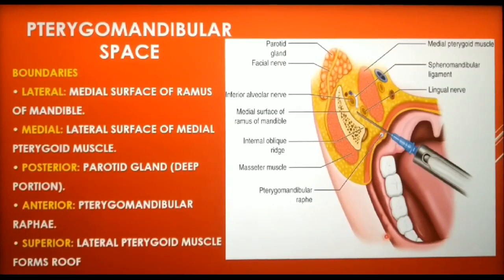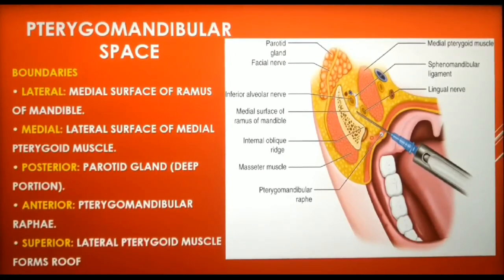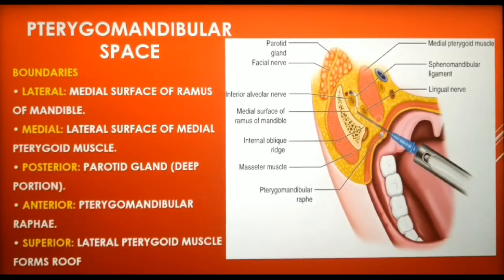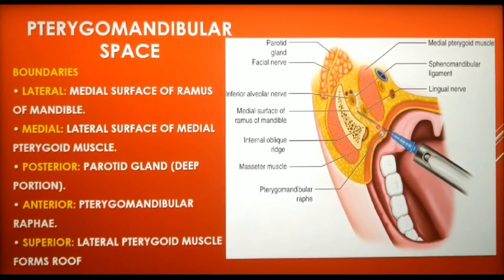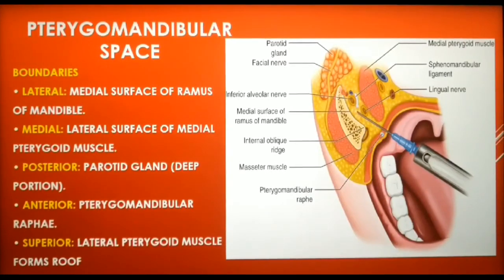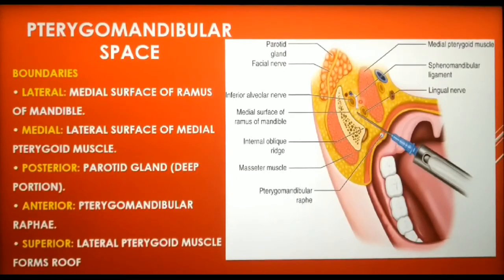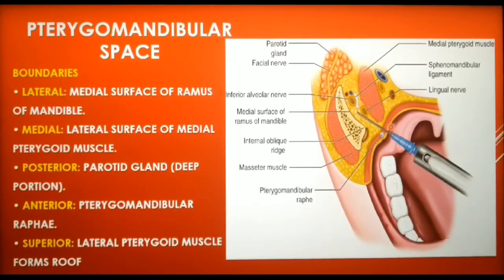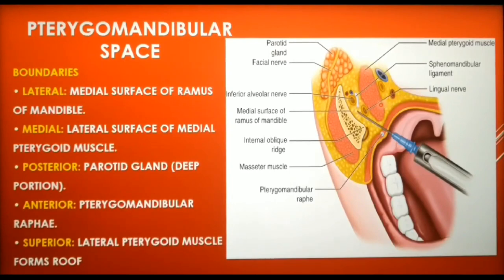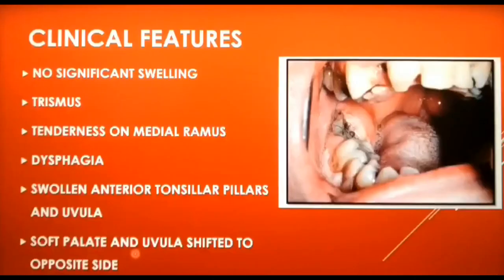Infection can also be produced by a contaminated needle used for an inferior alveolar nerve block or posterior superior alveolar nerve block injection. The boundaries of the pterygomandibular space are: laterally the medial aspect of the ramus of mandible; medially the lateral surface of the medial pterygoid muscle; posteriorly the deep part of the parotid gland; anteriorly the pterygomandibular raphe, formed by the superior constrictor and buccinator muscles; and the roof is formed by the lateral pterygoid.